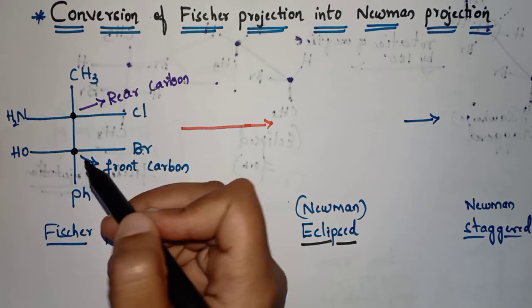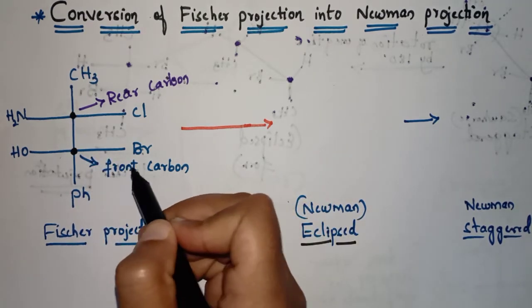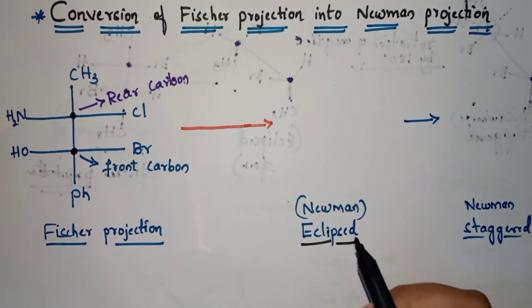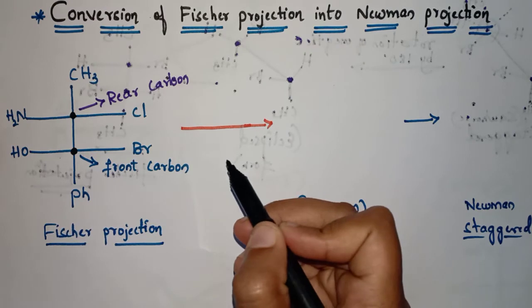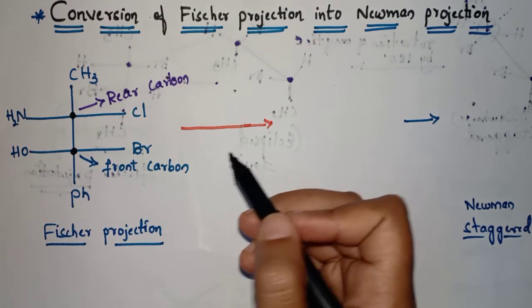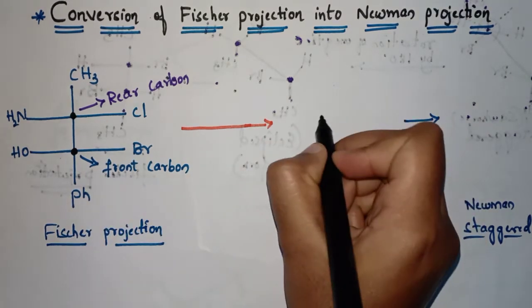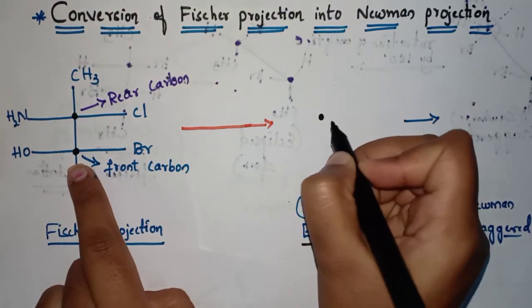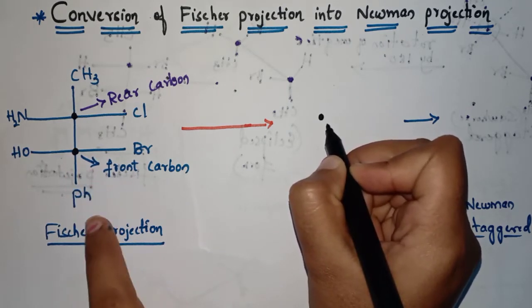We know that in Newman projection, the front carbon is shown by a dot and the rear carbon is shown by a circle. Now let's represent it — first of all we are taking the front carbon, represented by a dot. What are the groups which are attached to the front carbon?